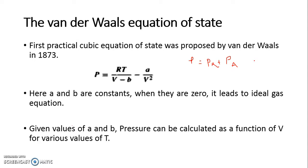That is why whenever the Van der Waals equation failed, improved versions of the cubic equation of state came into existence. When we put a equals to b equals to zero, the Van der Waals equation reduces to the ideal gas equation. Given a and b — or if we know how to calculate a and b — we can find any one of P, V, or T given the other two. This was discussed in our previous session.